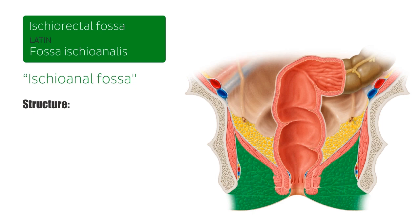Taking this image of a prism, let's start by talking about the apex. The apex of this space is directed anteromedially towards the pubic symphysis — which we can't see on this slide, but if you can imagine it coming out of your computer, you should be able to visualize it coming together at a point. This apex is where the levator ani and the obturator internus muscles intersect.